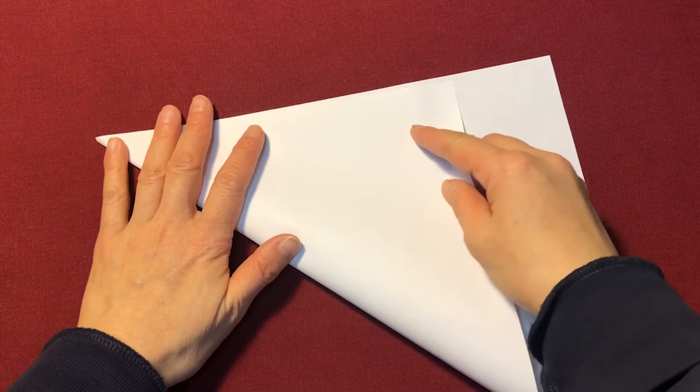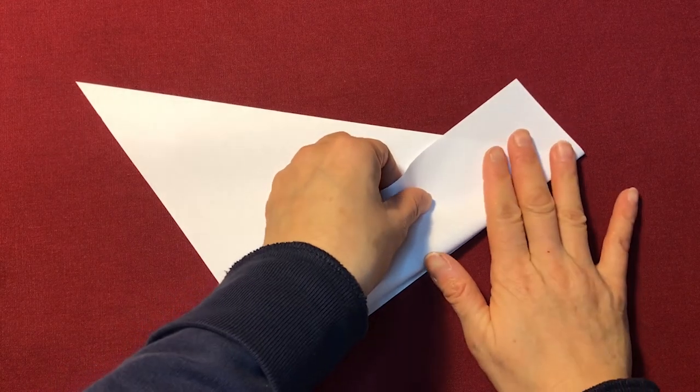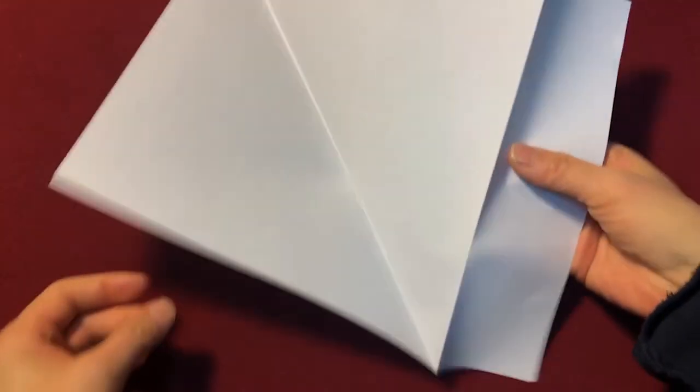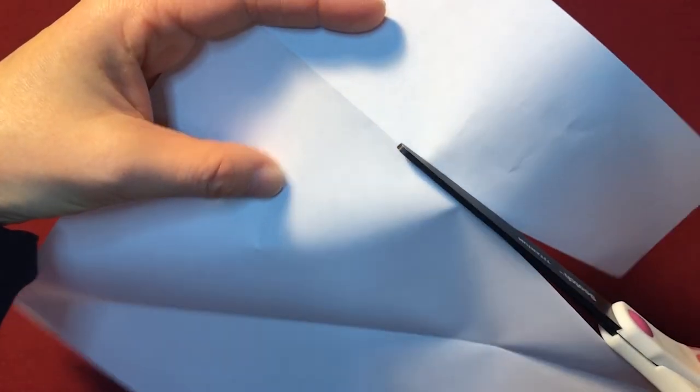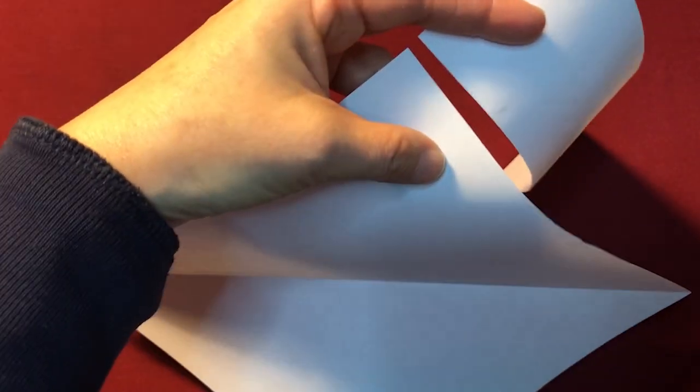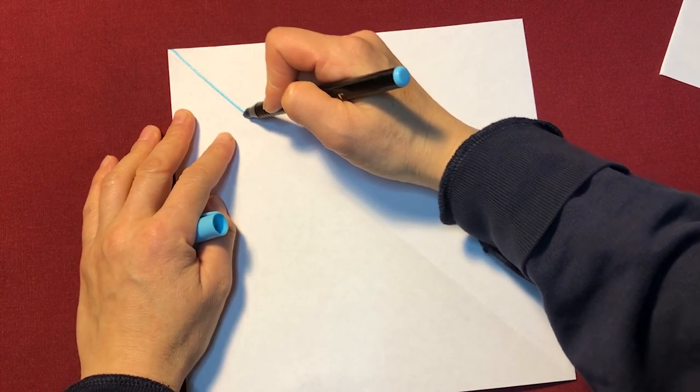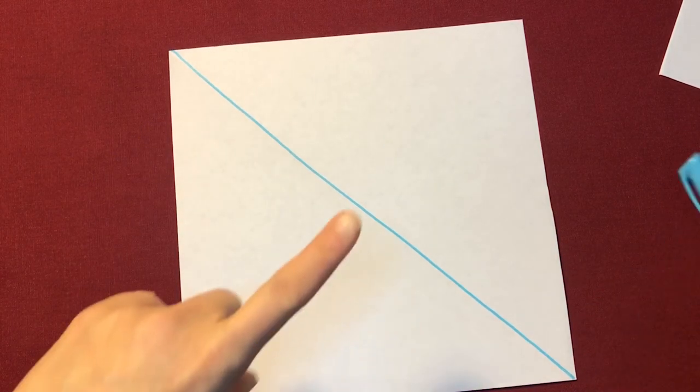Start making square as usual. Here is a diagonal crease and you're going to make a criss-cross crease. I'm going to draw a line. Okay, so this way.